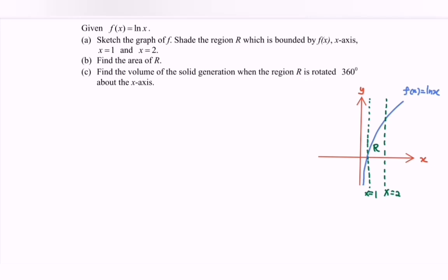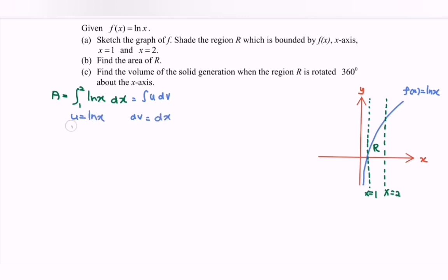Find the area of R. In order to find the area, A is equals to the integral of ln x dx, with limits from 1 to 2. Let's begin by using the integration by parts method with u and dv. So comparing with the integral of u dv, the u would be ln x and the rest we have dx. Differentiate u with respect to x, so we have 1 over x. Then integrate dv — integrate dx — so we have v equals to x.